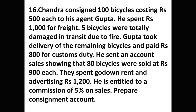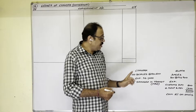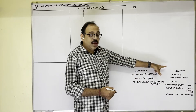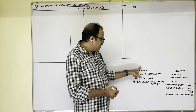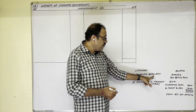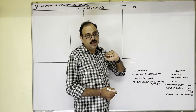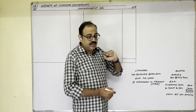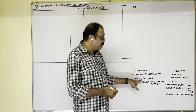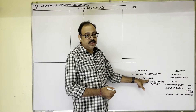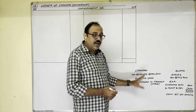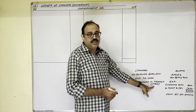Gupta is entitled to a commission of 5% on sales. Prepare the consignment account. Now let us see the solution. Chandra and Gupta are in consignment business. Chandra sent 100 bicycles at 500 rupees each on consignment basis. To send these goods, Chandra incurred expenditure of 1000 rupees, and in transit five bicycles were damaged due to fire.